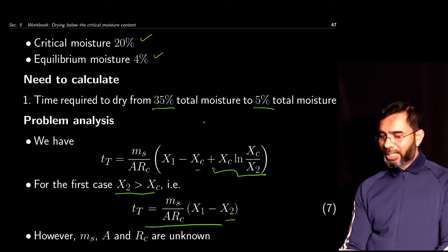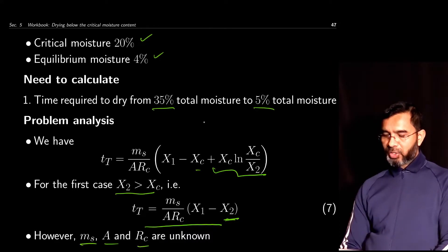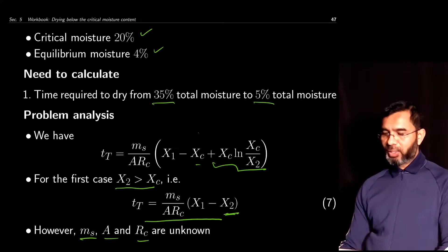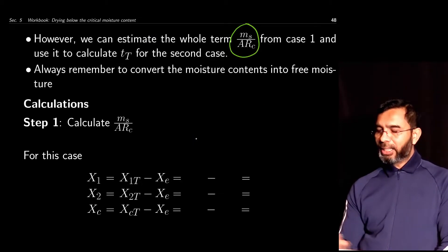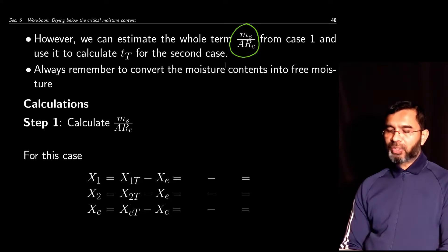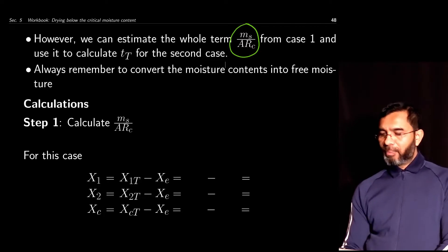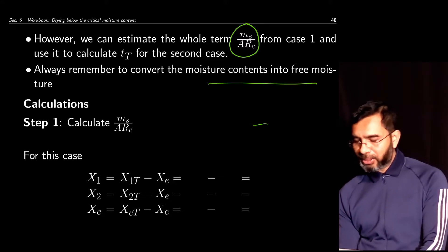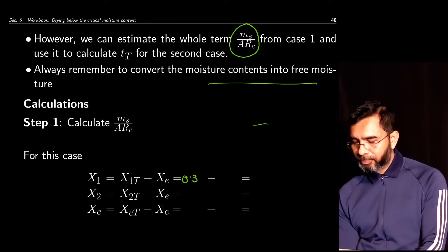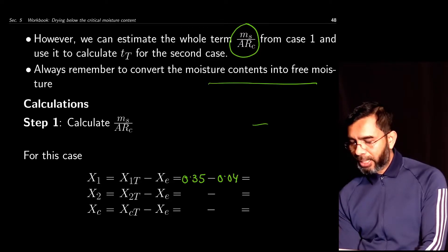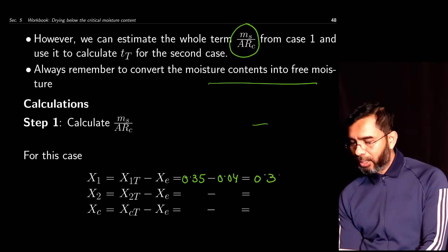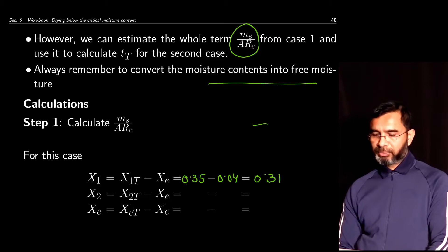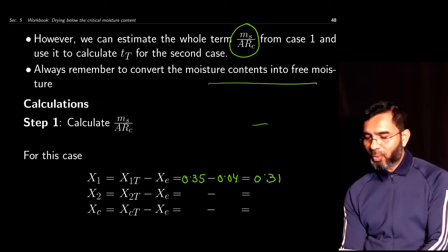We don't know Ms, A, or Rc individually, but we can estimate the combined term Ms/(A·Rc) from the first case, since t_t is given. We then use that value for the second case. We need to convert moisture content to free moisture. The initial total moisture is 35%, so 0.35 minus the equilibrium moisture 0.04 gives an initial free moisture of 0.31 (31%). For the first case, X2 total was 21%, so free moisture X2 = 0.21 − 0.04 = 0.17.